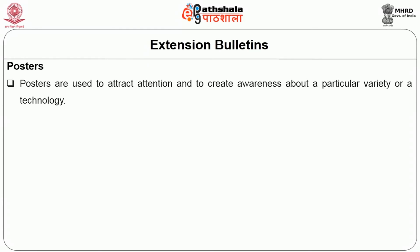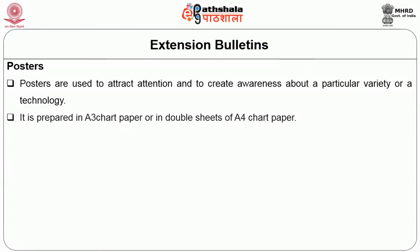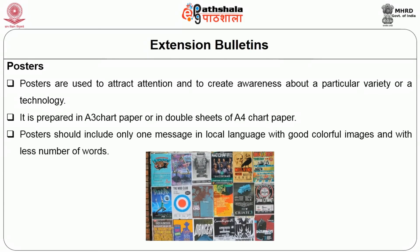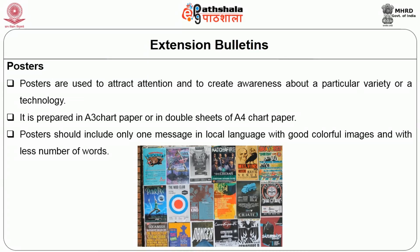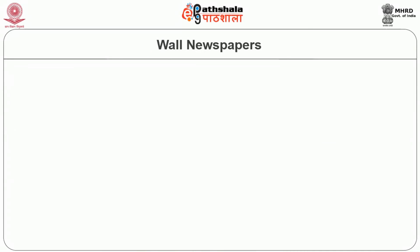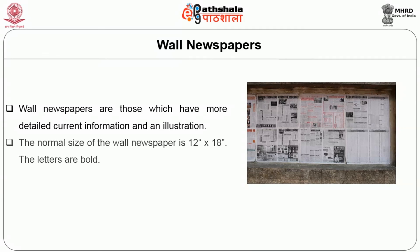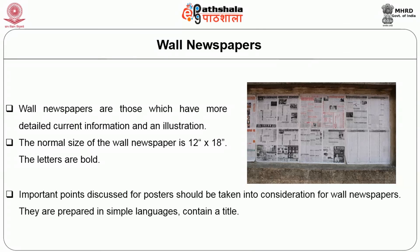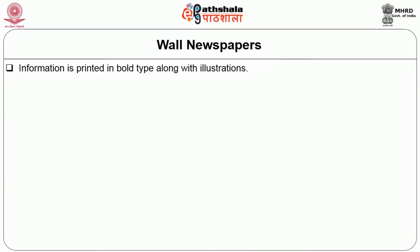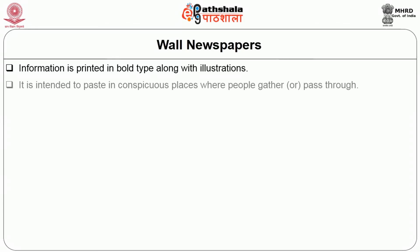Posters are used to attract attention and create awareness about a particular variety or technology. They are prepared on A3 chart paper or double sheets of A4 chart paper and should include only one message in local language with good colorful images and few words. Wall newspapers are those which have detailed current information and an illustration. The normal size of a wall newspaper is 12 inches by 18 inches with bold letters. They are prepared in simple language, contain a title, present information in bold type along with illustrations, and are intended to be pasted in conspicuous places where people gather or pass through, with protection from wind and rain.